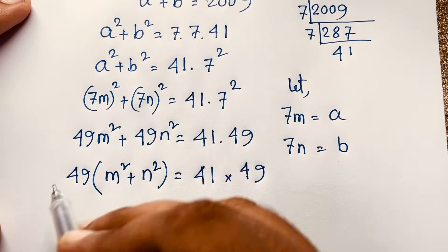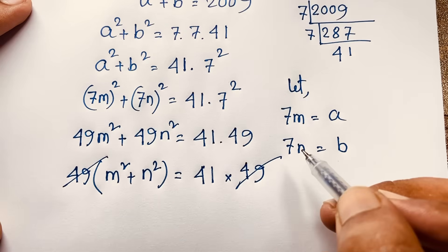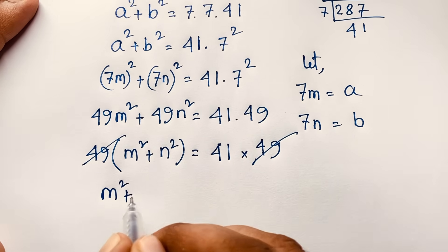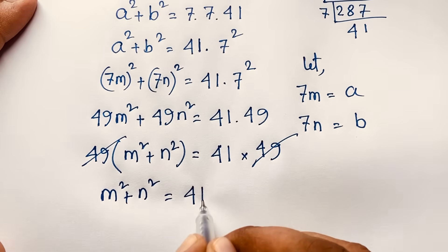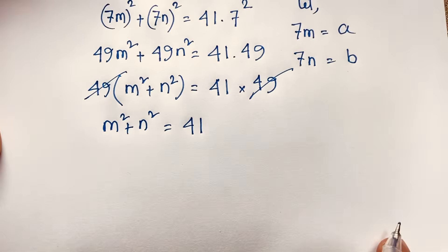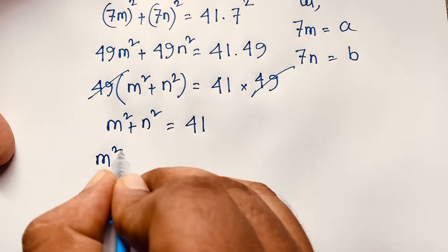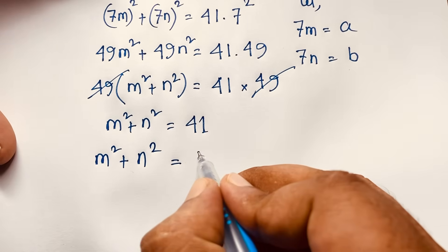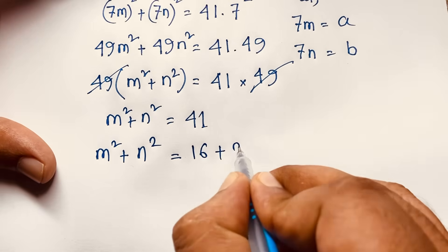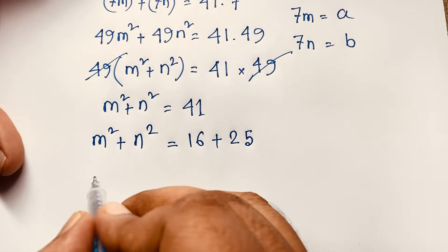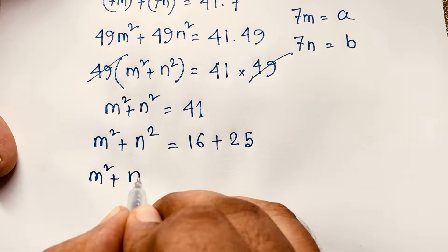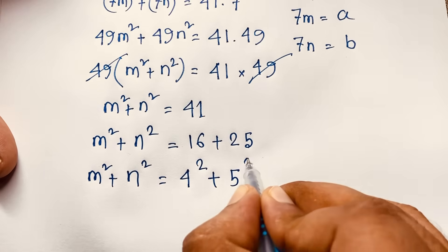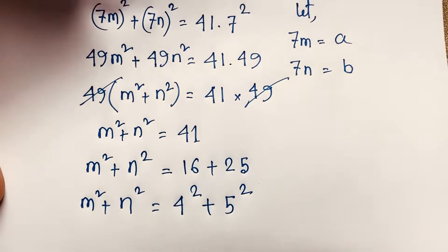If I divide both sides by 49, the 49s cancel out and we find m squared plus n squared equals 41. Now, 41 can be written as 16 plus 25, which is 4 to the power 2 plus 5 to the power 2. So 4 squared is 16 and 5 squared is 25.